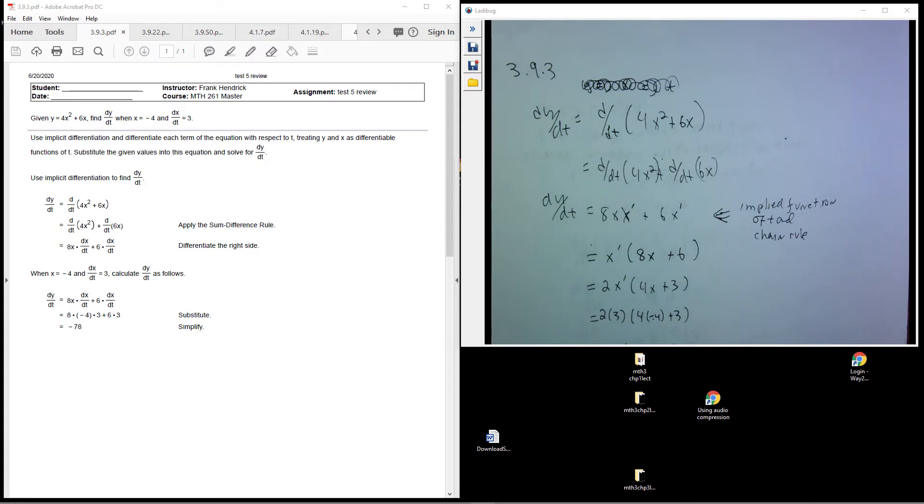This problem here, given the function y equals 4x squared plus 6x, asks us to find dy/dt when x equals negative 4 and dx/dt equals 3. You end up using implicit differentiation to get this done.